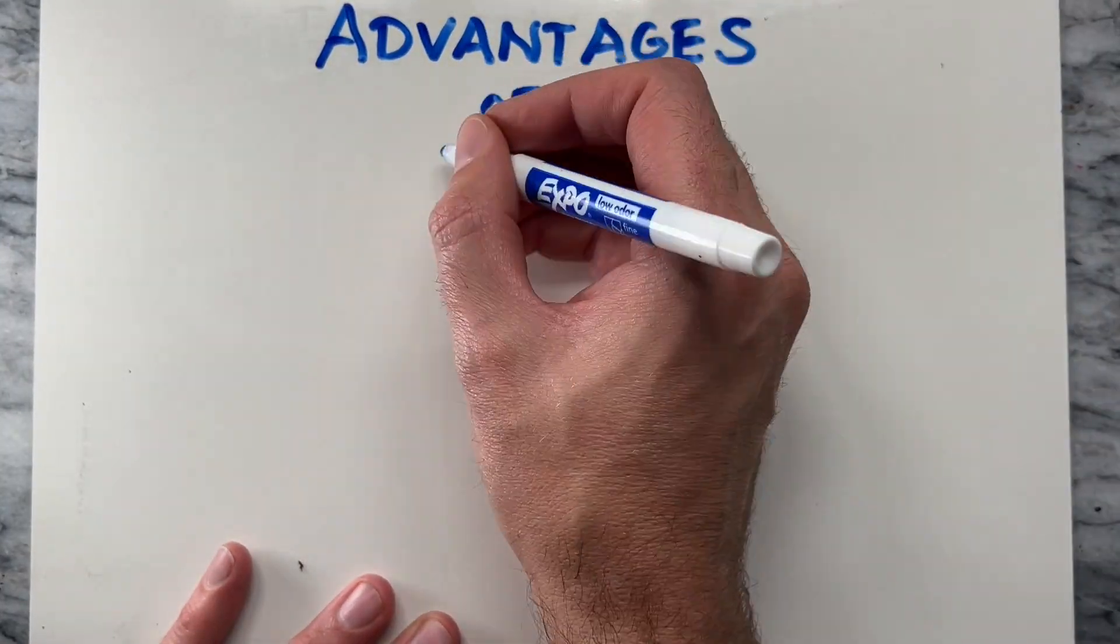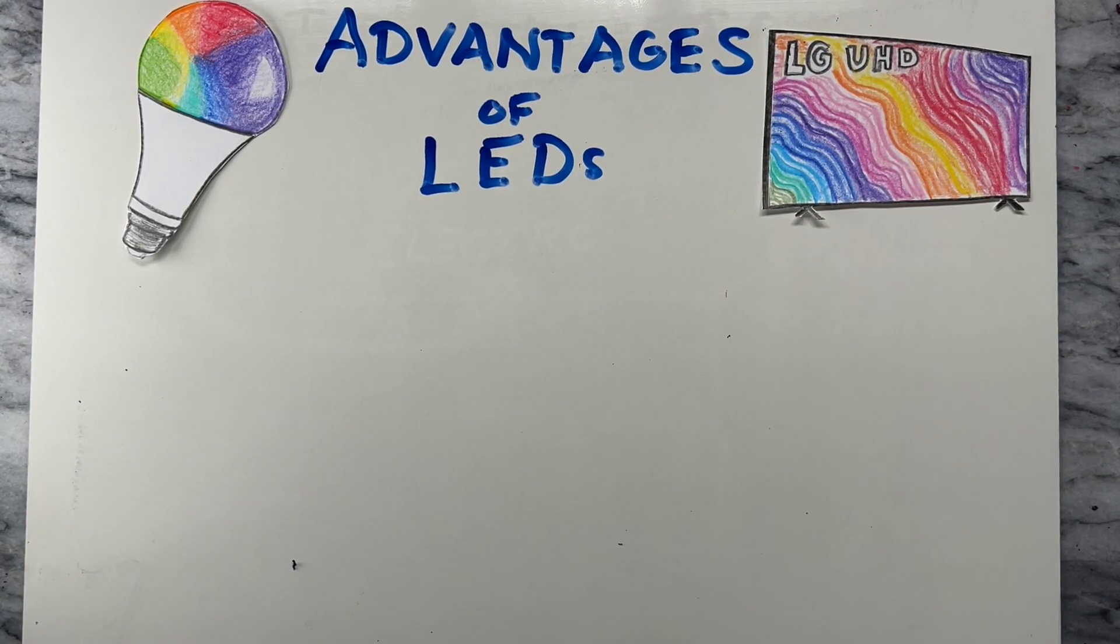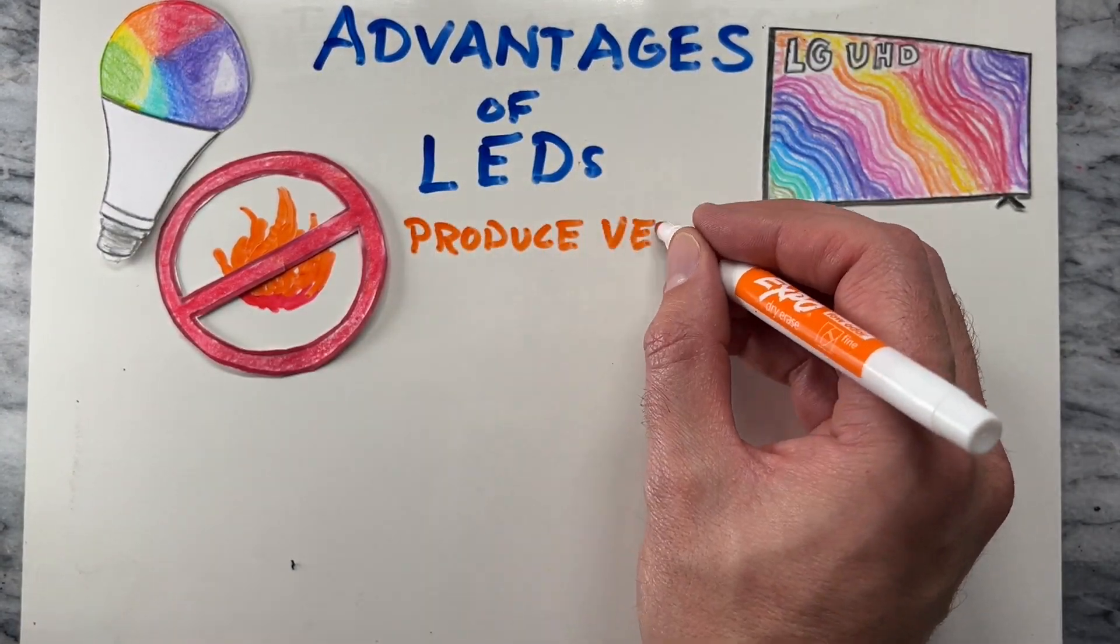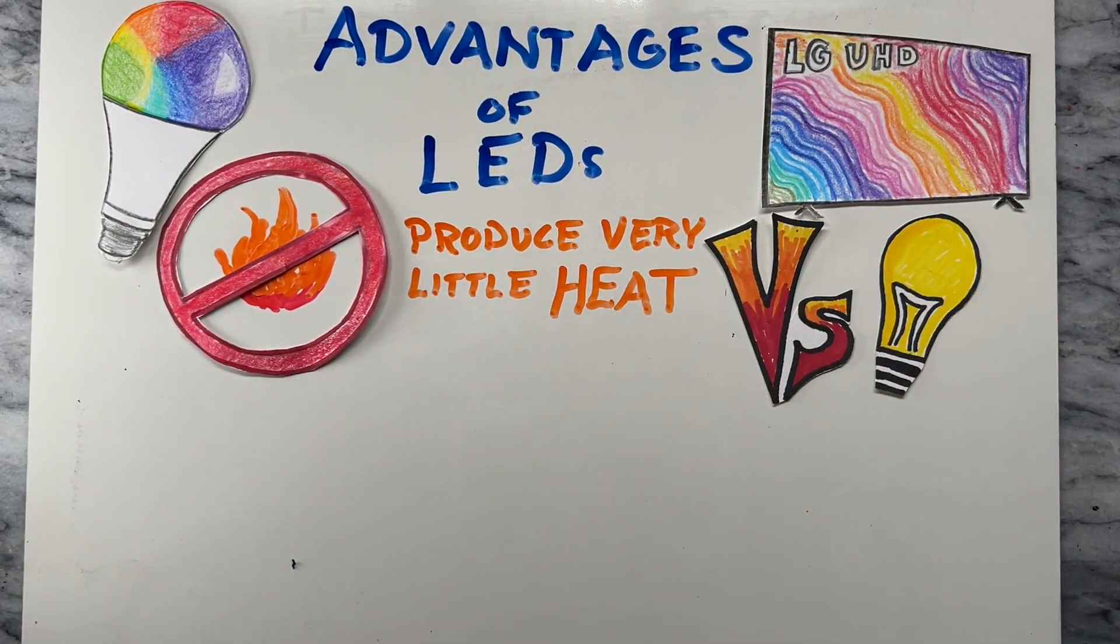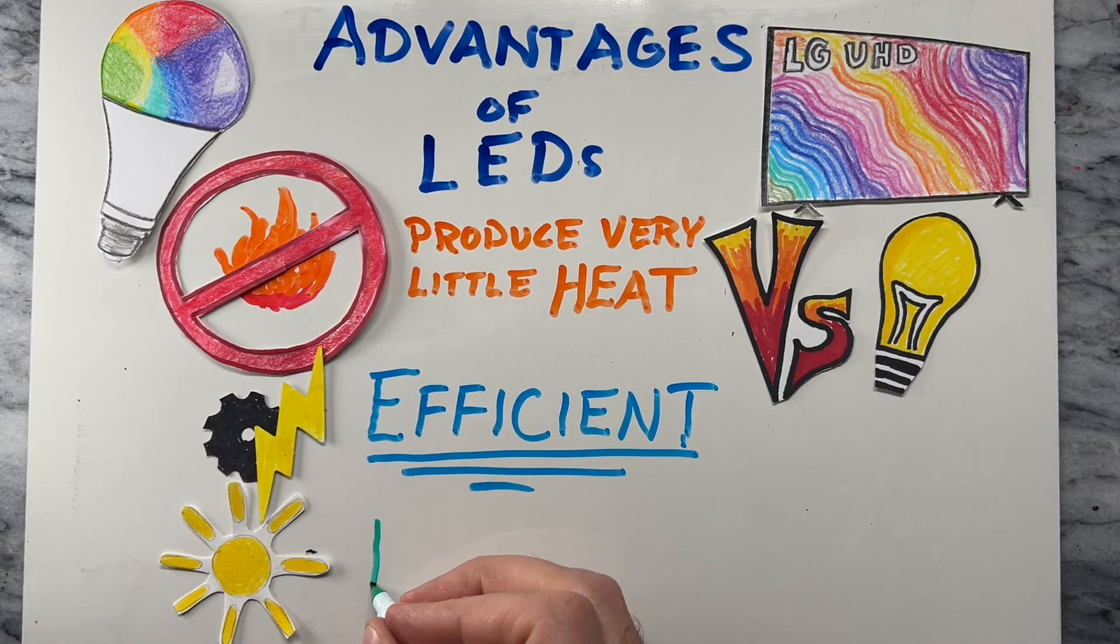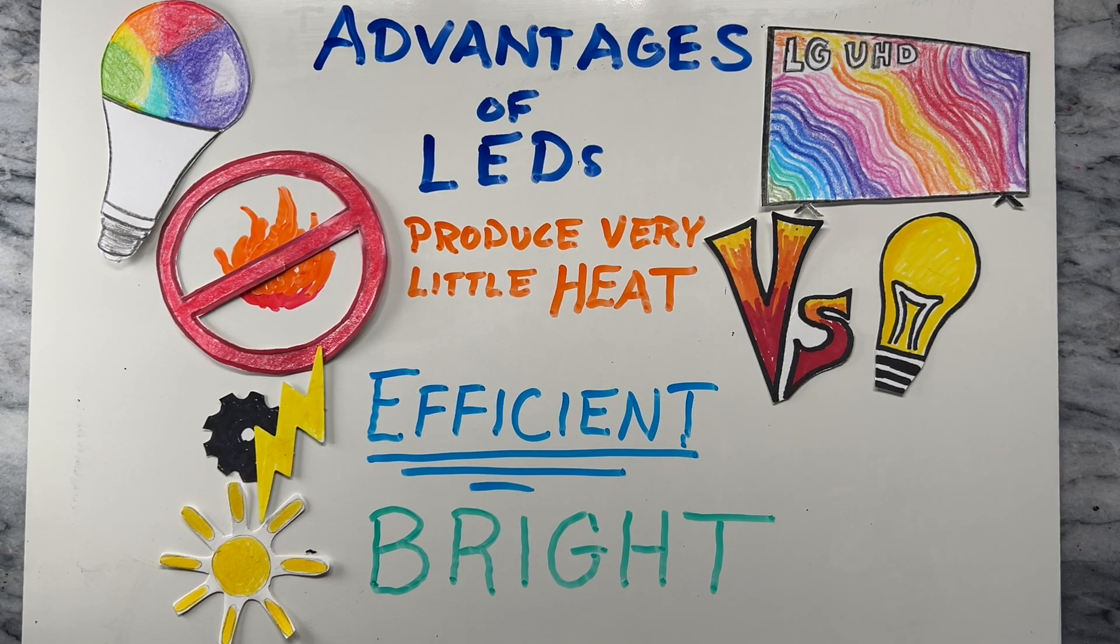There's 3 big advantages to LEDs beyond the fact that they can produce millions of different colors. First, LEDs produce very little heat when compared to the incandescent light, where heat is produced in the filament to the point that the light is created. Second, LEDs are therefore much more efficient because they do not waste as much energy in the form of heat. Lastly, LEDs can produce extremely bright light that can be seen from very far away.